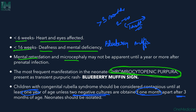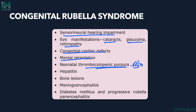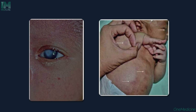The manifestations of congenital rubella syndrome include sensorineural hearing loss, eye manifestations such as cataracts, glaucoma, and retinopathy, congenital cardiac defects, mental retardation, neonatal thrombocytopenic purpura (the blueberry muffin lesions), hepatitis, bone lesions, meningoencephalitis, diabetes mellitus, and progressive rubella panencephalopathy. Major organs affected include the CNS, cardiovascular system, liver, bones, and eyes. Images show a baby with congenital cataract and the characteristic blueberry muffin lesions.